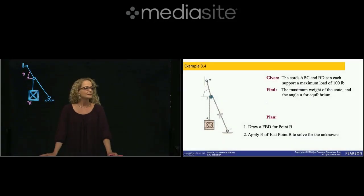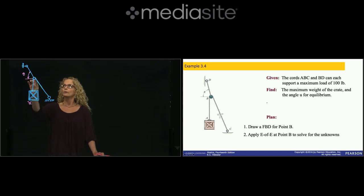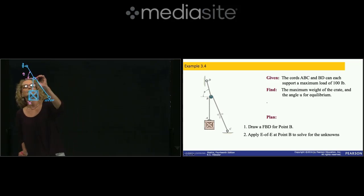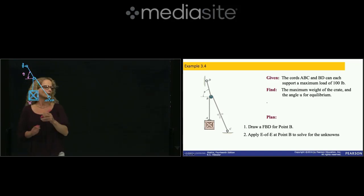This is problem 3.4. We are working in equilibrium of particles. In this case, we have this cord that passes through this ideal pulley and holds this weight. And the pulley is held by another cord.